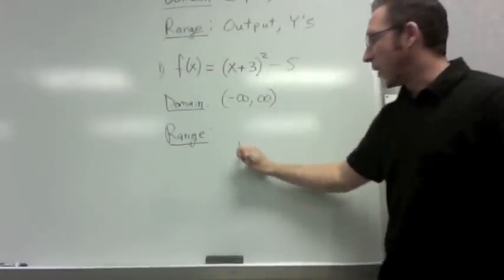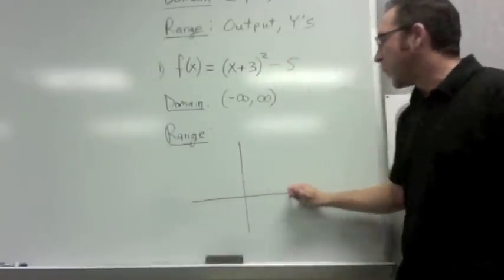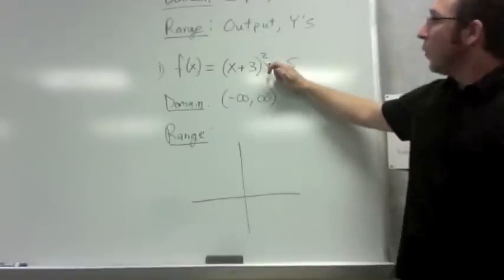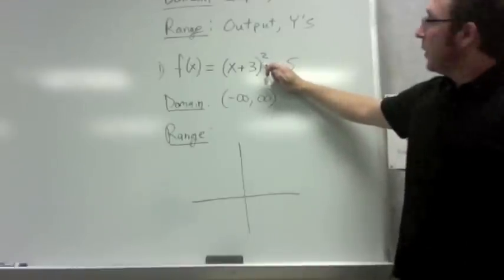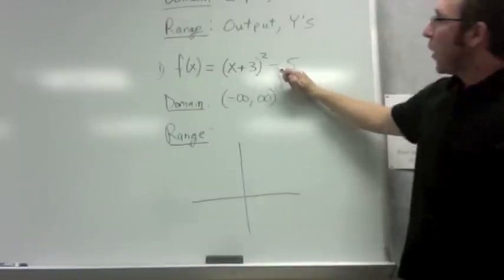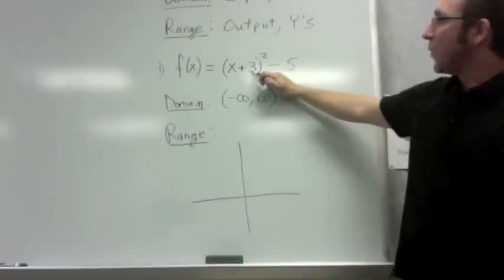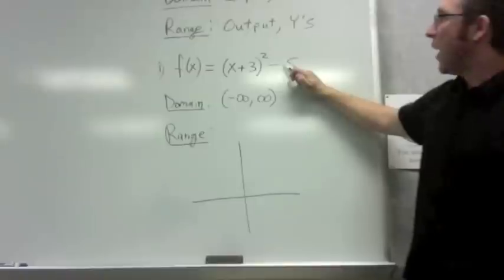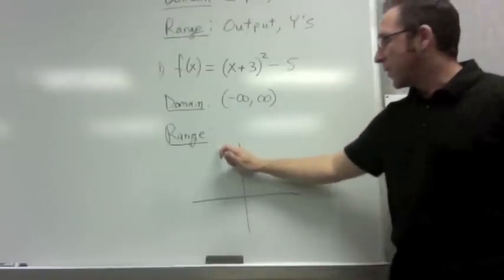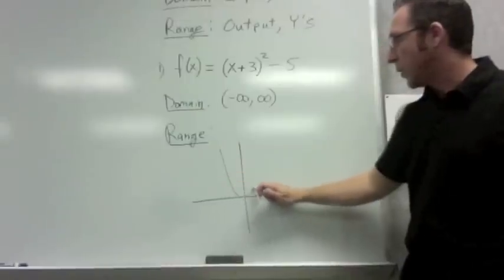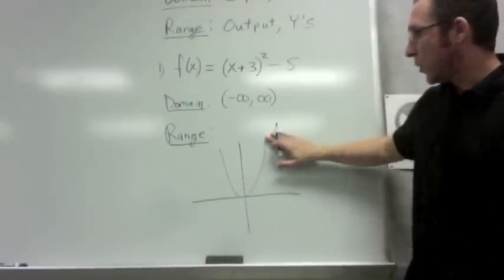It's much easier, though, to actually look at a graph and see what's happening. For this basic parabola, I know by the plus 3 and the minus 5 that this graph has shifted 3 units to the left and 5 units down from a basic start of x squared. So x squared moves in that motion there.